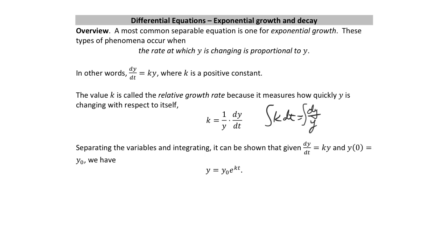If we know that the rate at which a function is changing is proportional to the function itself — dy/dt equals ky — and we know what y(0) is, then we end up with: y equals the initial population (or balance) times e to the power k times t. We're going to use that formula; we don't need to recreate it through differential equations, so we get to use it for free.